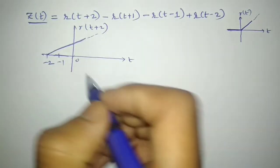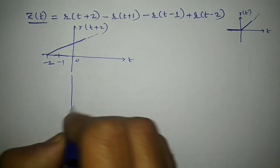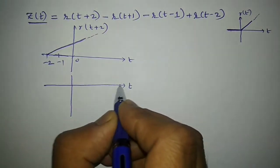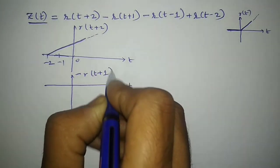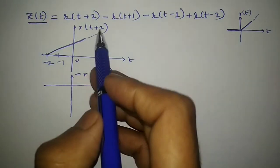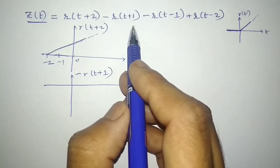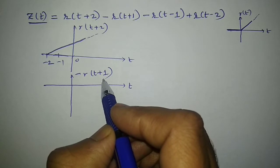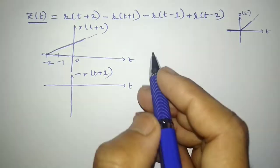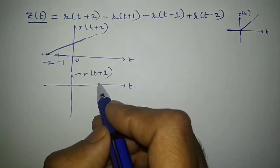The next task is to sketch minus R(t+1). With respect to the ramp signal, it is always better to add the signals rather than subtracting. I need to sketch minus R(t+1), so I am doing addition — it is as good as A plus minus of B, same as A minus B.